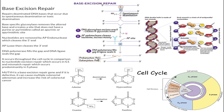Let's take a look at this base excision repair diagram. Base-specific glycosylases will remove the altered base, and this creates a site that does not have a purine or a pyrimidine. We call these sites apurinic or apyrimidinic sites. DNA is made up of a phosphate group, a sugar, and a nitrogenous base, and the nitrogenous bases are split up into purines or pyrimidines.